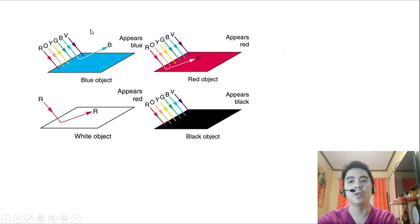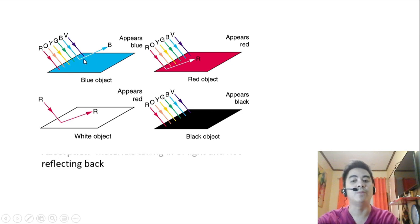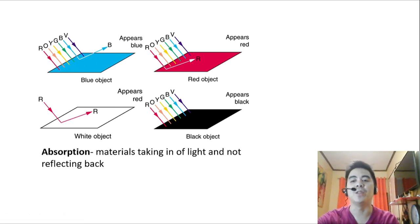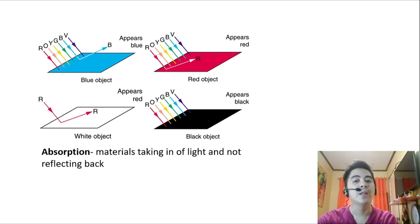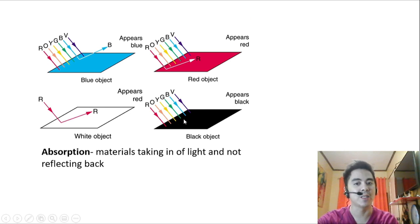Next is absorption. We have here different colors — red, orange, yellow, green, blue, and violet. The blue is reflected, but the other colors are absorbed. Absorption is the taking in of light and not reflecting it back. For example, when light strikes a black surface, the material will absorb the light and nothing is reflected. Unlike a blue object where blue is reflected, in a black object all the colors of light are absorbed.